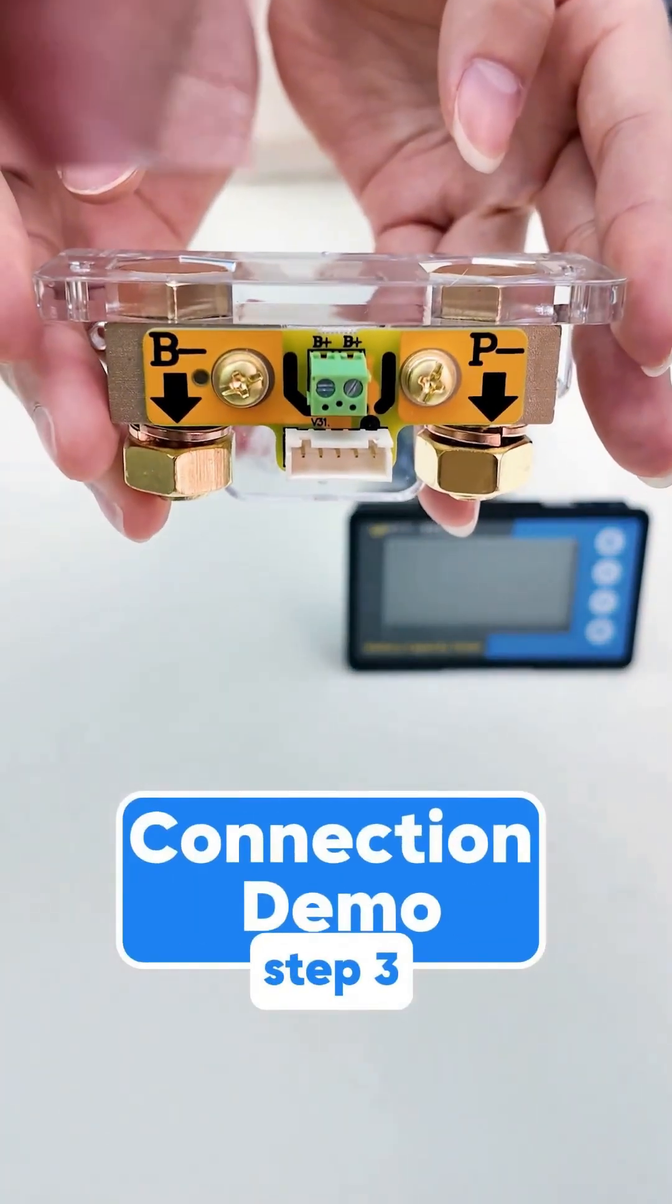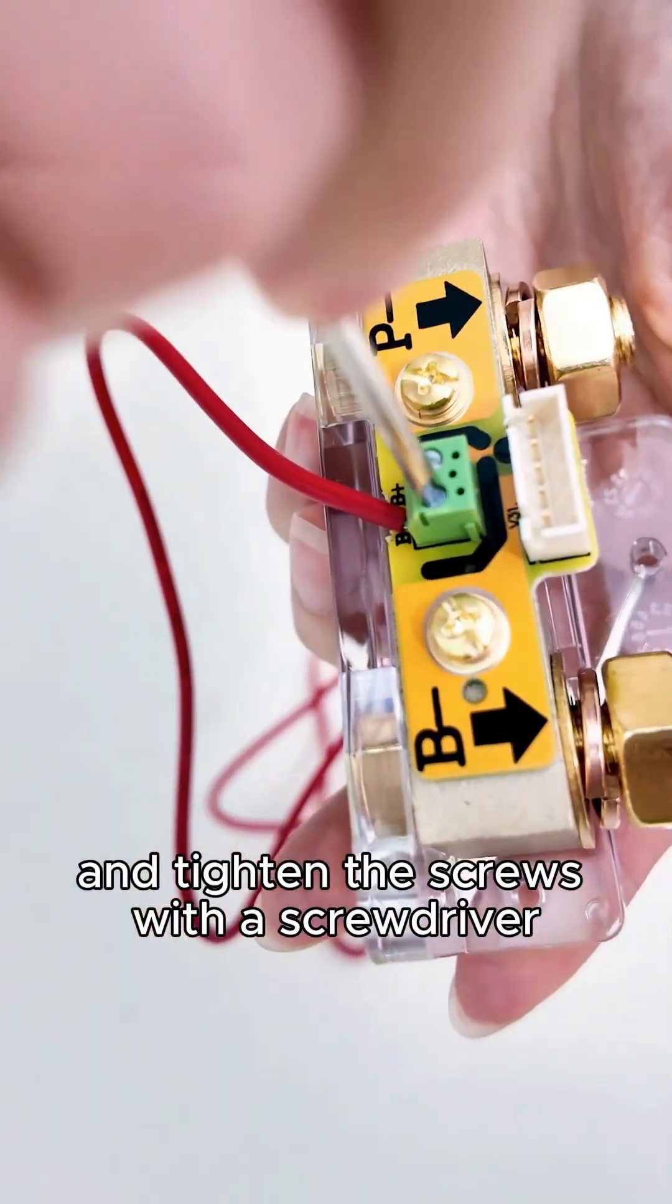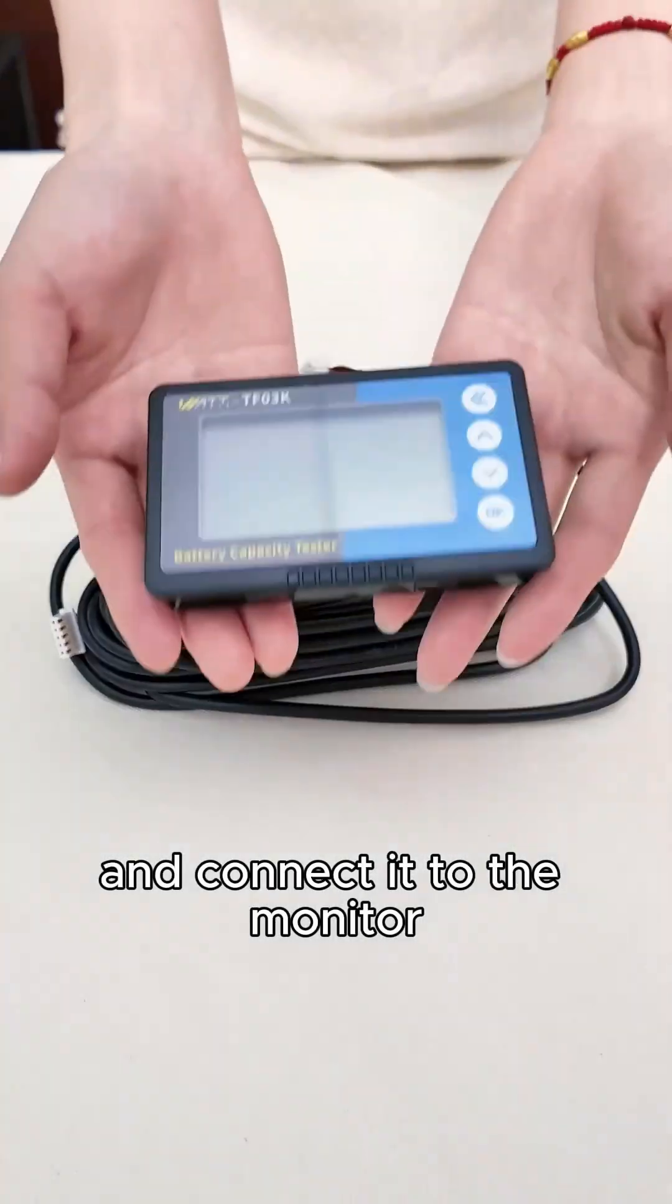Step 3: Connection Demo. Connect the red wire to the sampler B-positive and tighten the screws with a screwdriver. Then, take out the black shielded cable and connect it to the monitor.